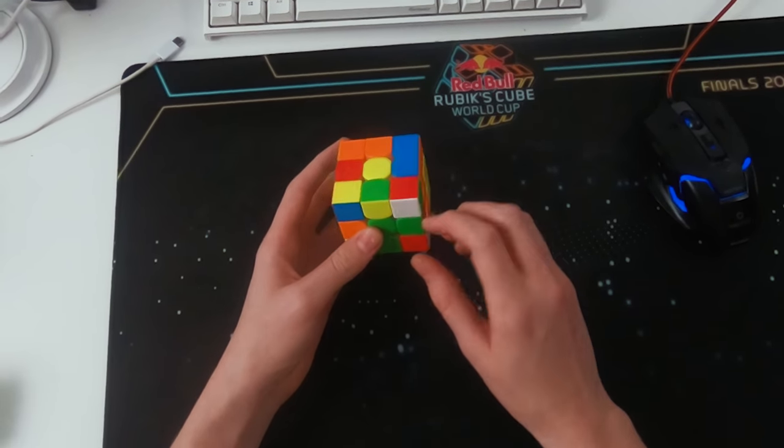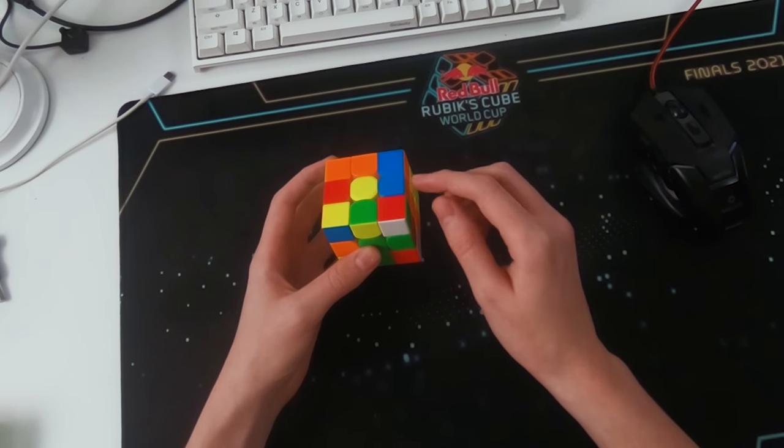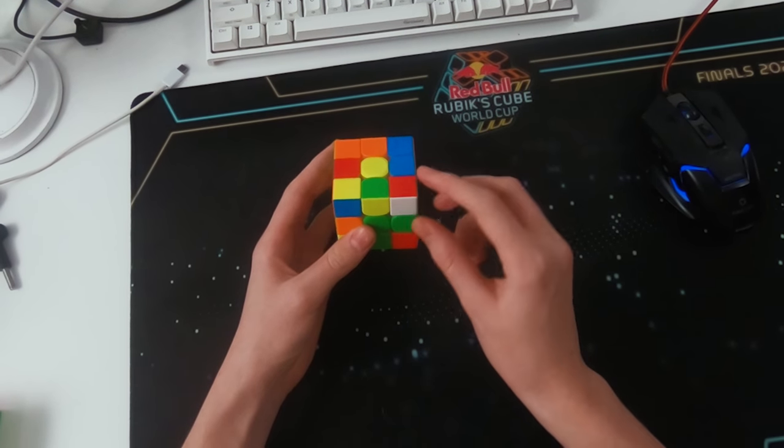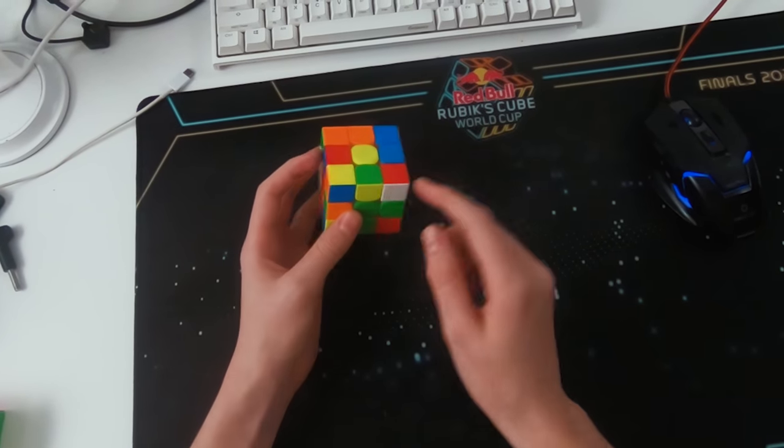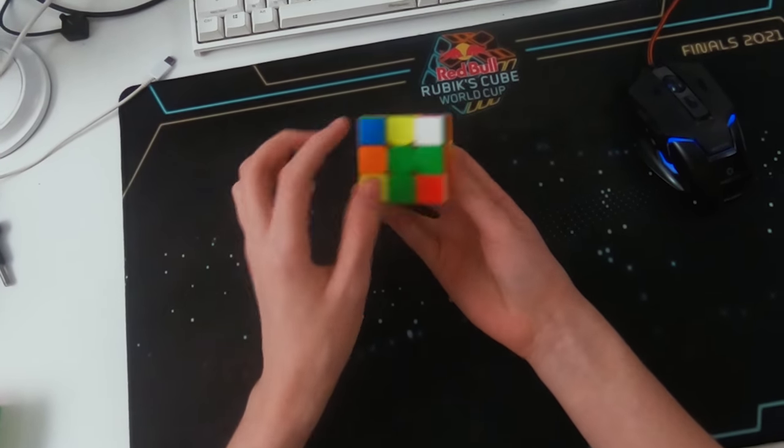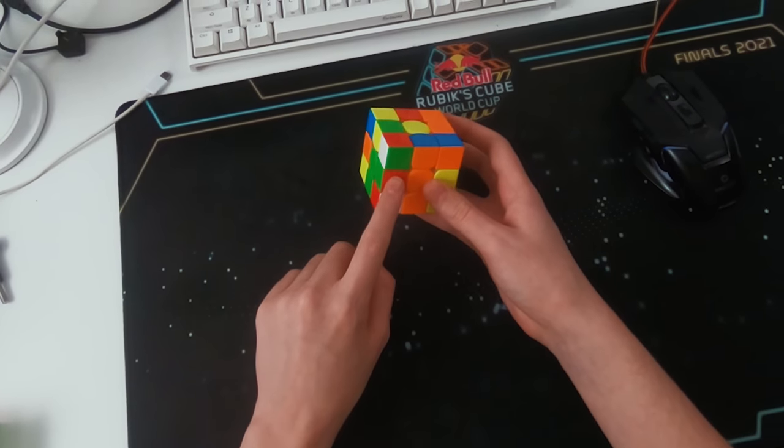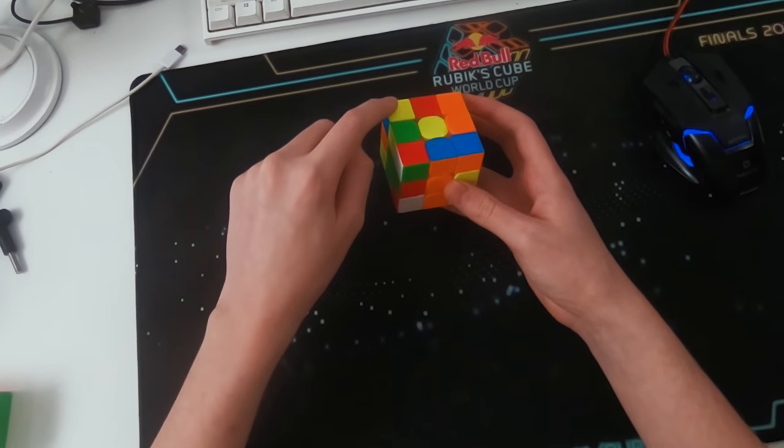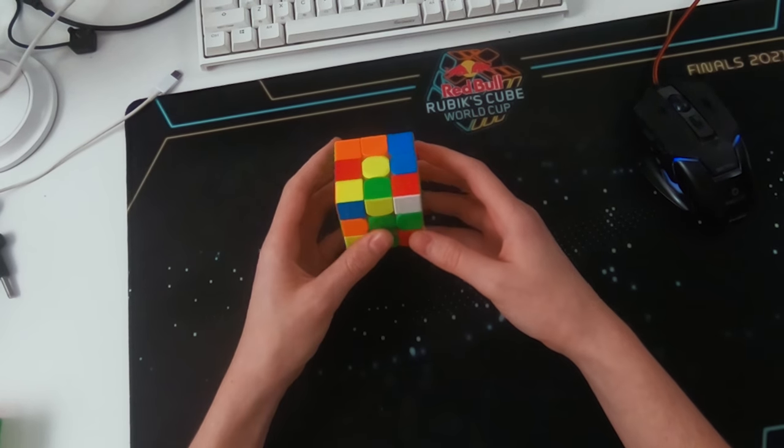But before you do that, you can already see the next two pairs. So the way I see this, is when I insert this pair to the back, this corner is going to flip this way. So the white sticker is going to be here, and also the corner is going to move to here. After that, I can rotate, solve these two pieces into here, which will put this edge here, with red in front, and this corner, I believe, is going to be here, with the white sticker facing here. So then you can cancel some moves.